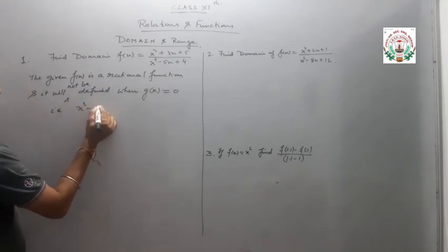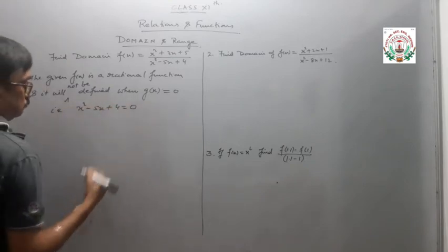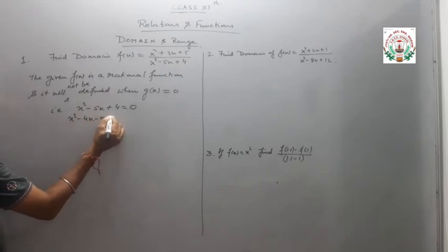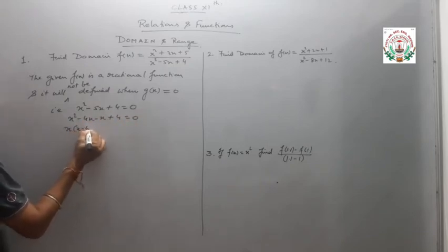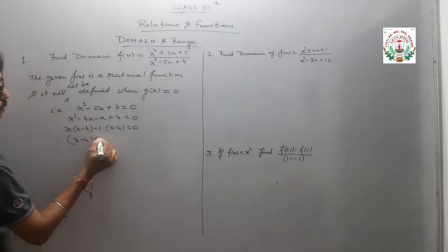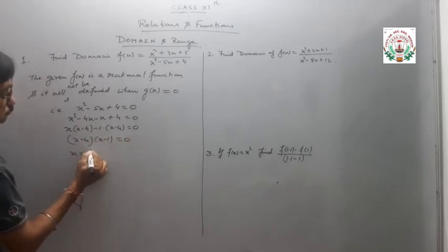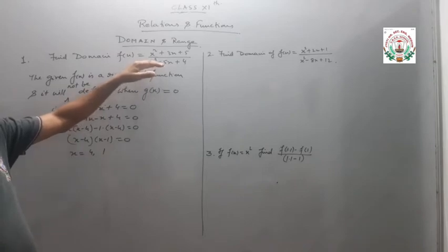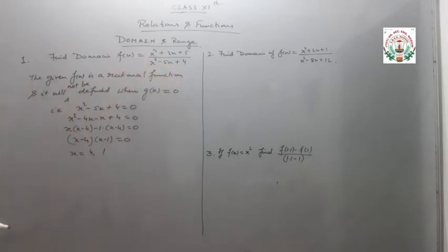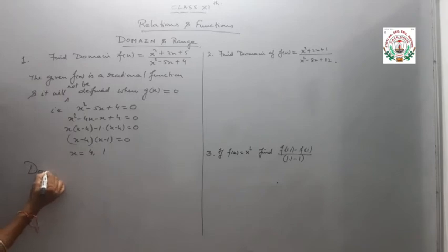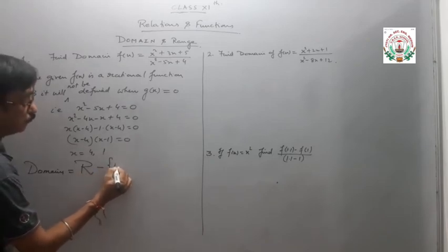Setting the denominator x squared minus 5x plus 4 equal to 0 and factoring: x squared minus 4x minus x plus 4, giving (x minus 4)(x minus 1) equal to 0. So x equals 4 and x equals 1. If we substitute x equal to 4 or 1, the denominator becomes 0. So the domain is the set of all real numbers excluding 1 and 4.